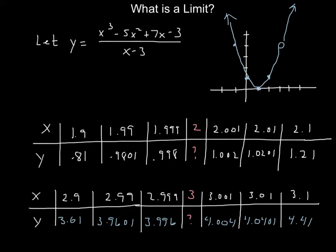First, let's get an idea about what a limit is. We're going to look at this function: y equals x cubed minus 5x squared plus 7x minus 3, all divided by x minus 3. If you put that into your calculator, remember to put parentheses around the numerator and denominator, otherwise you won't get the graph. The graph you should get looks like a parabola, but with a hole at x equals 3, because when you plug in 3, both the numerator and denominator come out to zero.